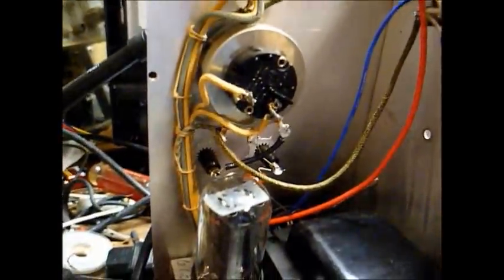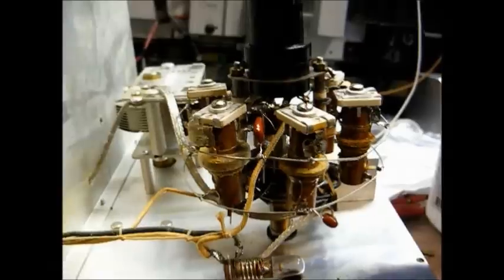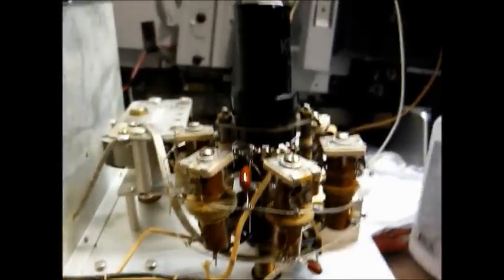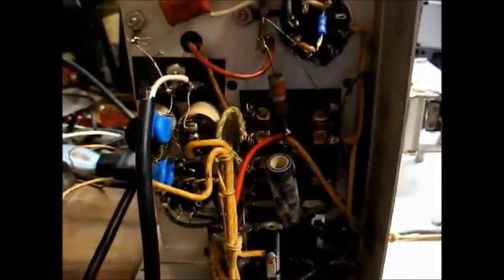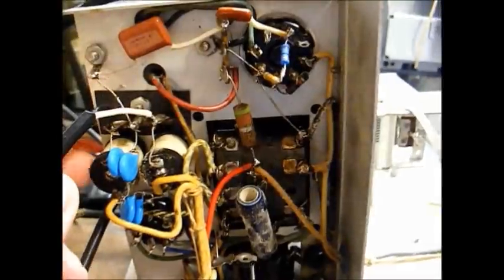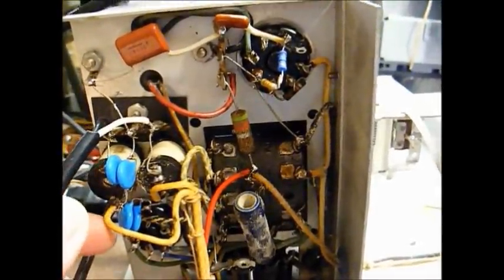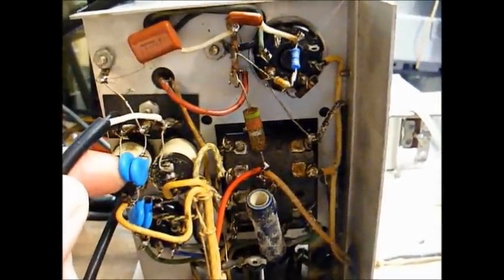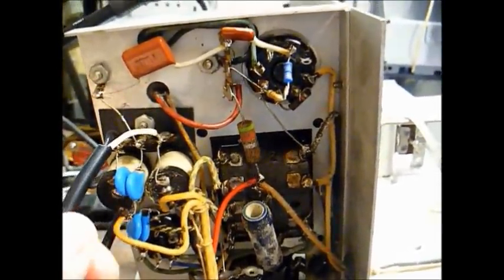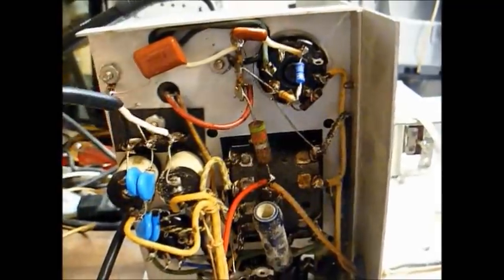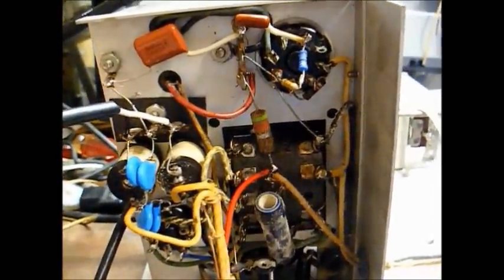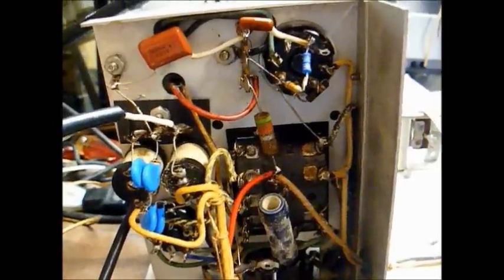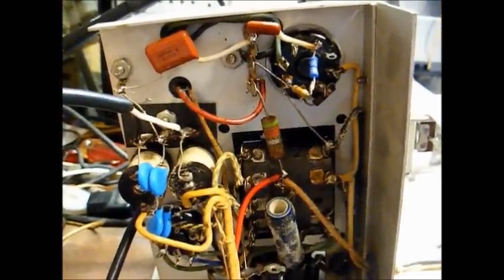There are a couple of capacitors that I replaced on the RF assembly, as well as under the chassis here. These blue disc capacitors are the AC line bypass caps that connect from one side of the AC line to ground. It's really important that you use AC safety capacitors in this application.